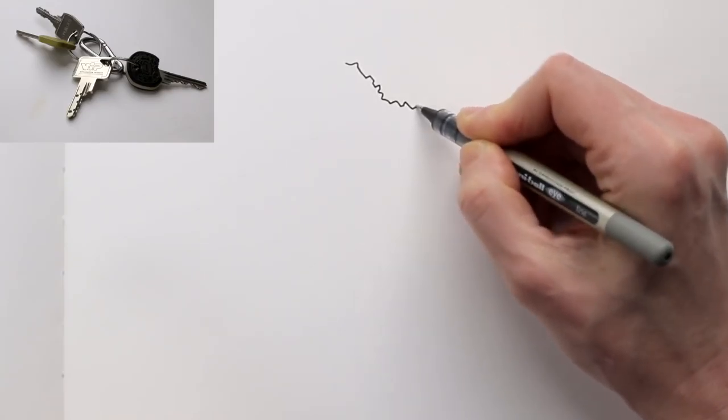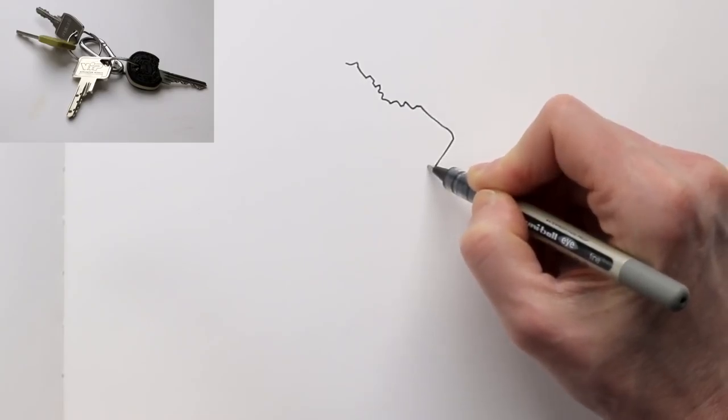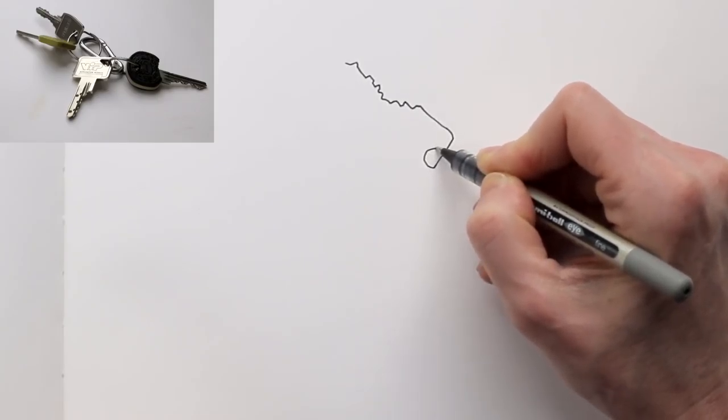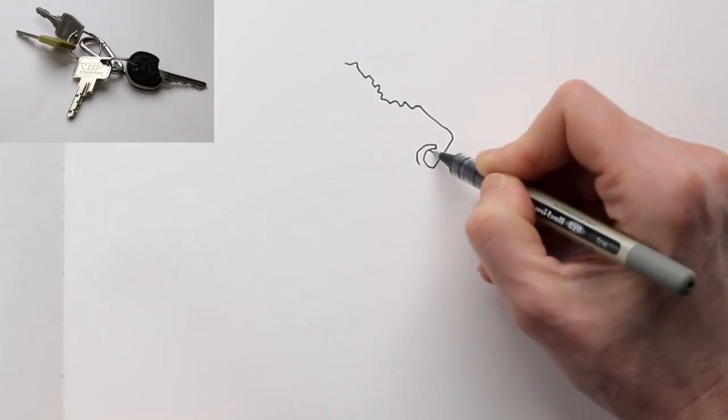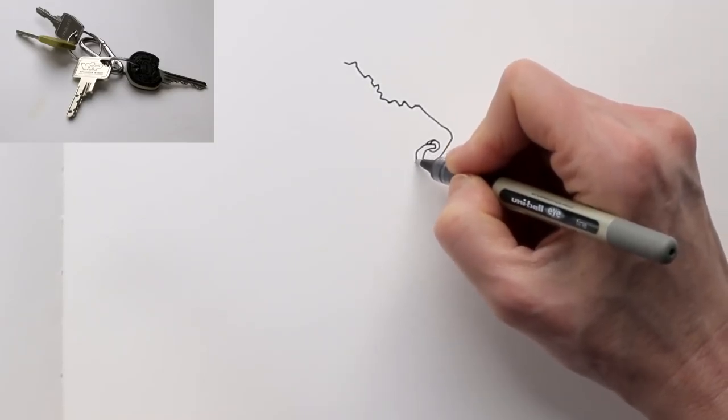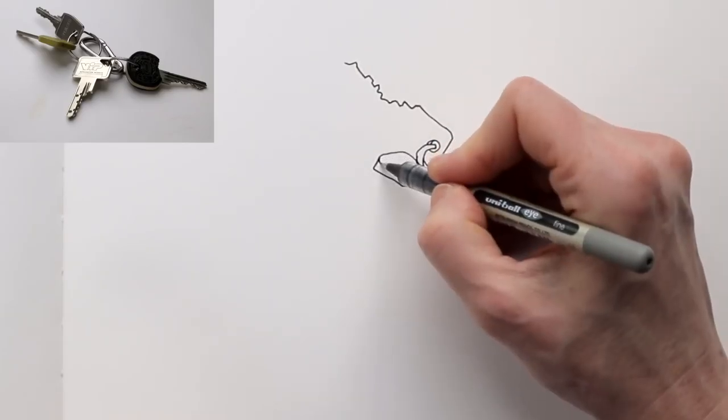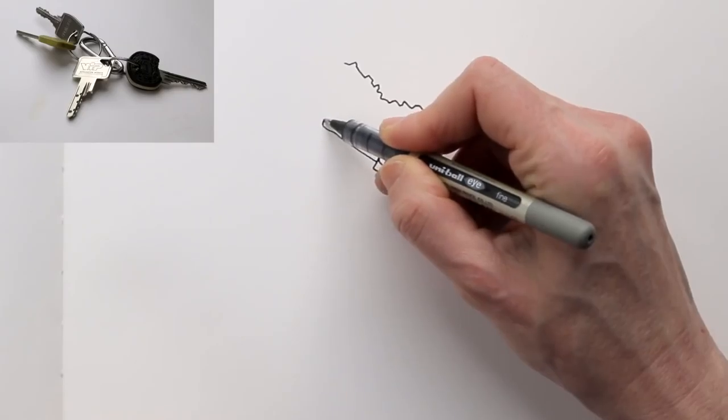Toss them on the table and they will land in a position and then draw it like that. So I toss my keys on the table and actually they fanned out really nicely. So I can draw each key individually, but still have kind of an interesting overlap. That can be a little bit of a challenge.